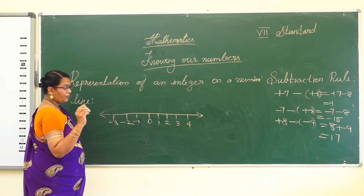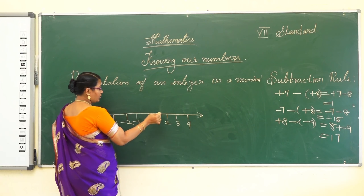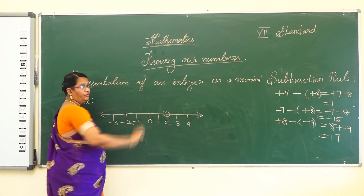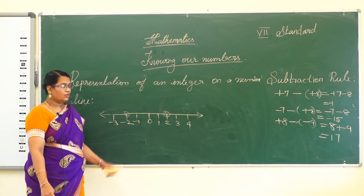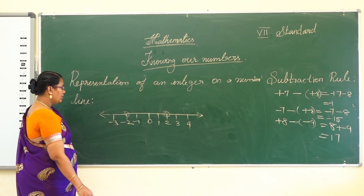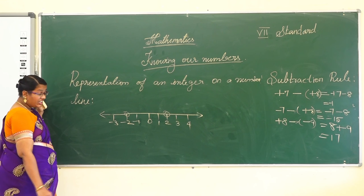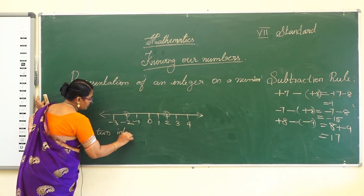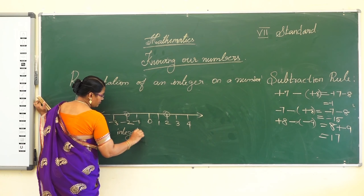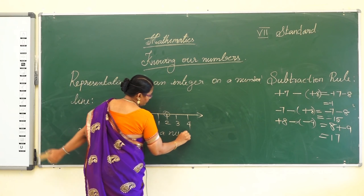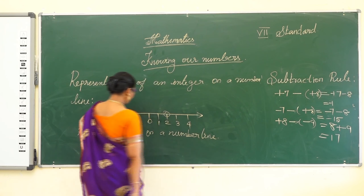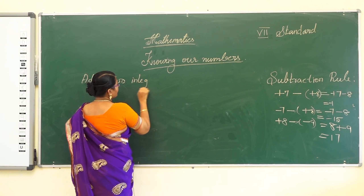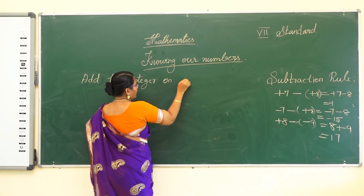For example, 2 is given — just mark the point at 2. And -2 is given — mark the point at -2. You already know this well. Now, how do you add two integers on a number line?